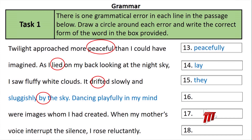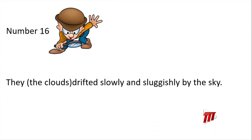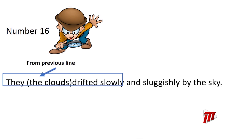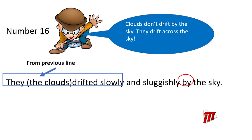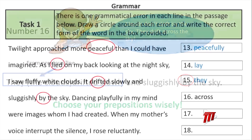Number 16: 'The clouds drifted slowly and sluggishly by the sky.' Do clouds drift by the sky? No — they drift across the sky. So 'by' is incorrect, and we must choose our prepositions wisely. The correct answer is 'across.'